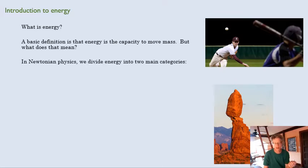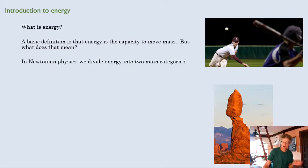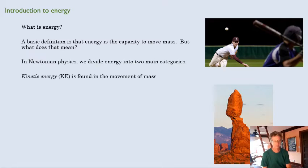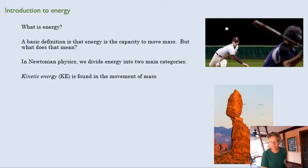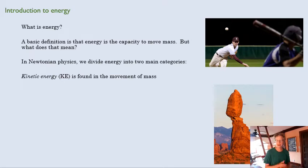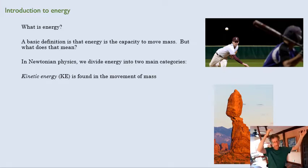We can divide energy into two different categories, two different types of energy, and notice that they both have to do with motion. The first one is kinetic energy, and kinetic energy is found in the movement of mass. So when I throw this baseball and it's hurtling through the air, it has energy. A wave has energy — it's moving through space. Wind has energy. That makes sense to us.